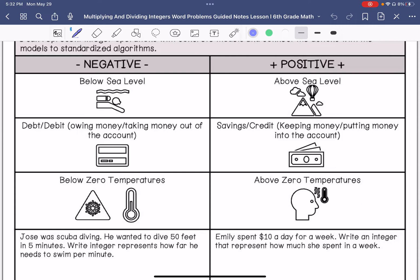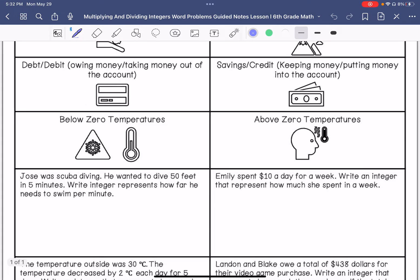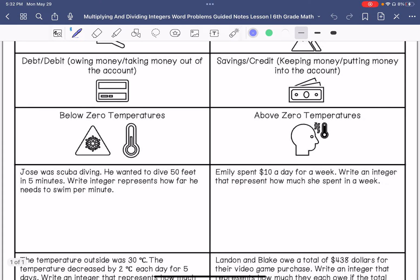Jose was scuba diving. He wanted to dive 50 feet in 5 minutes. Write an integer that represents how far he needs to swim per minute. So he's diving, so that's negative in 5 minutes. So we have negative 50 divided by 5. So if we have a negative and a positive, that is going to be a negative answer.